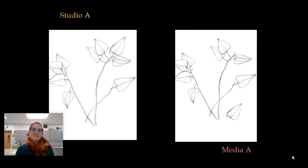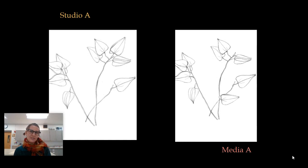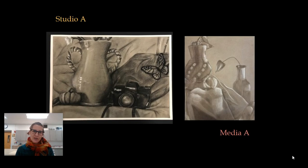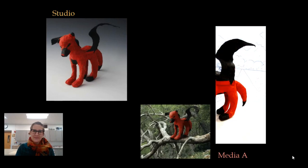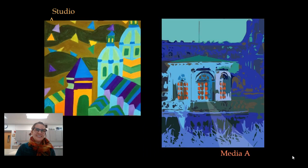In Studio A, we focus mostly on drawing. We do some contour line drawing and cross contour line drawing. In Media A, there would be a digital component done on the computer to create an animation like the one that you see. We do a lot of drawing from observation, a sculpture project usually out of paper mache, and sometimes we animate that sculpture. We also do a painting project which focuses on color theory.